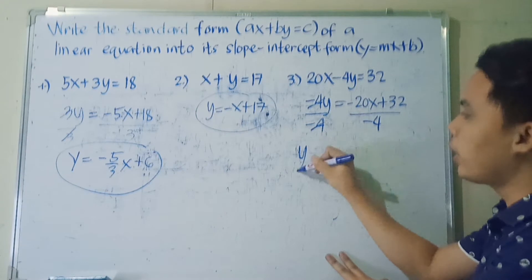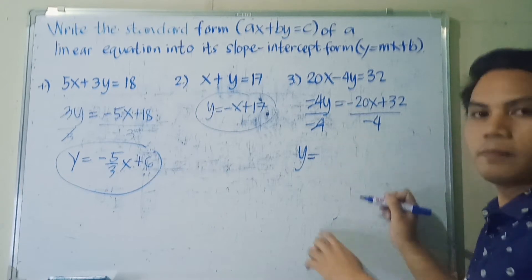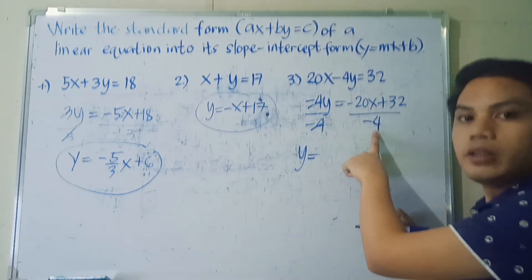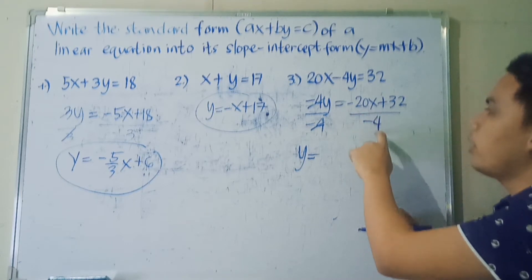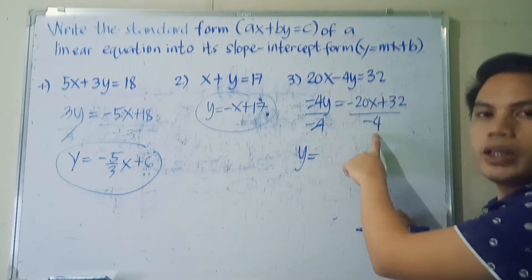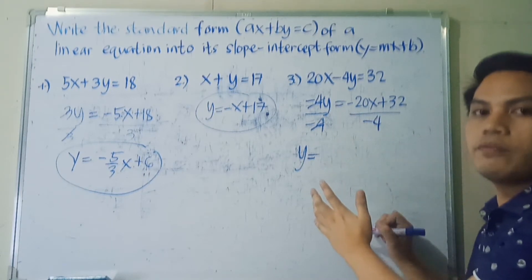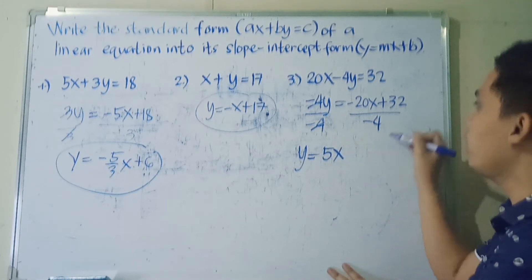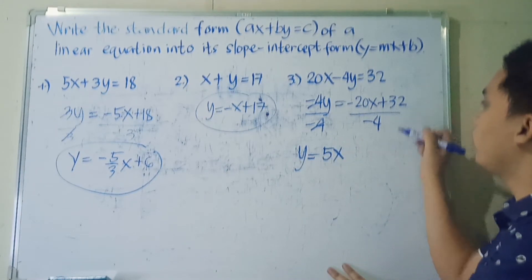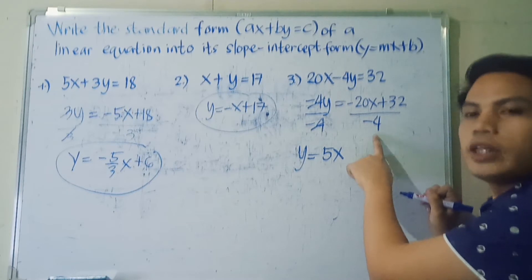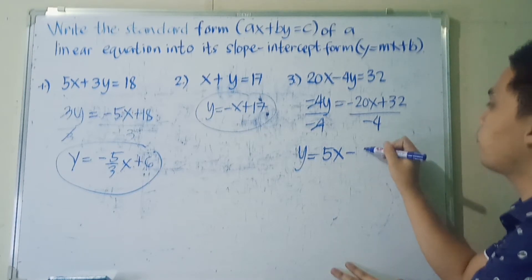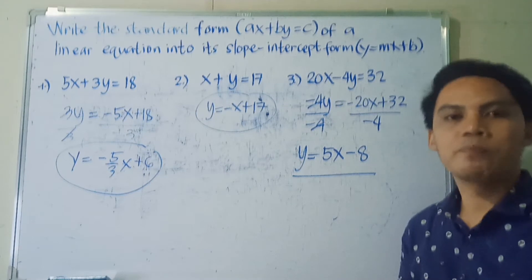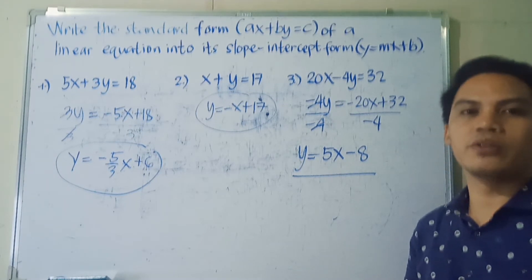After dividing by negative 4, Y remains on the left side. Then term by term, we divide the right side by negative 4. Negative 20X divided by negative 4 equals positive 5, giving us 5X. Then 32 divided by negative 4 equals negative 8. So the final answer is Y is equal to 5X minus 8.